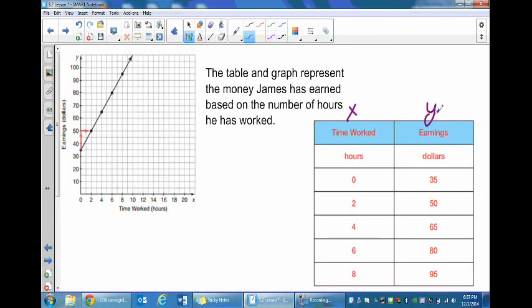You can see from the table they already gave us the little arrows for the rise over the run. Looks like we're starting at 35 and working our way up to 50. So from 35 to 50 would be 15, that would be our rise. And then our run goes from 0 to 2.